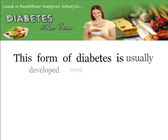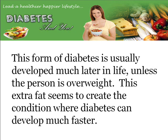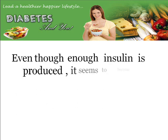This form of diabetes is usually developed much later in life, unless the person is overweight. This extra fat seems to help create the condition where diabetes can develop much faster, which is why younger people are now developing the disease.